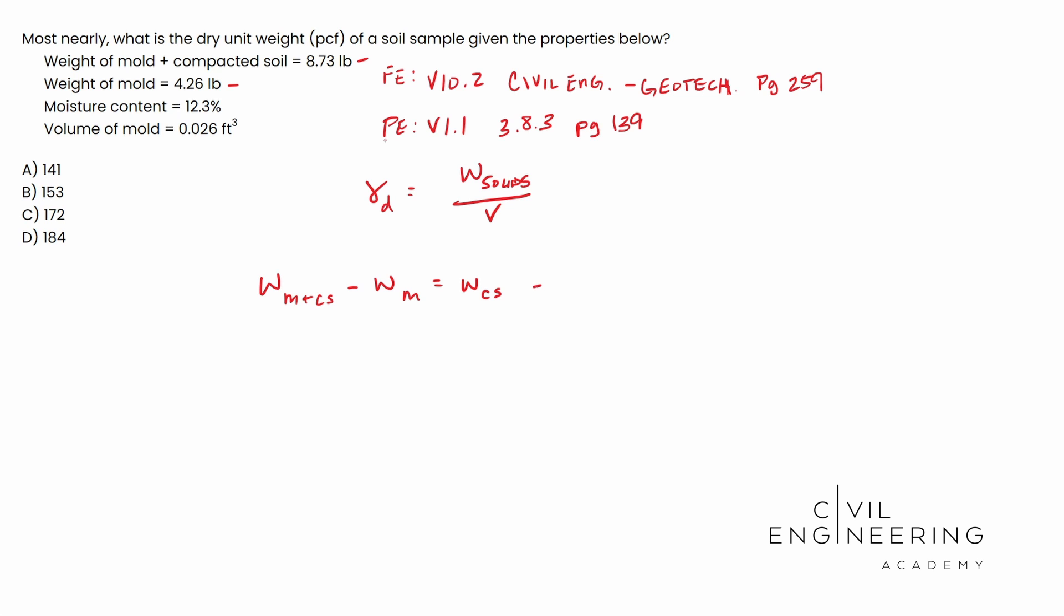And so when you subtract those out, this is 8.73 minus 4.26. That's what it gives us in the problem, 4.26. Both of those are in pounds. You end up with 4.47 pounds. And this is actually weight total.